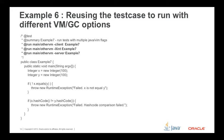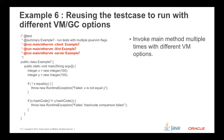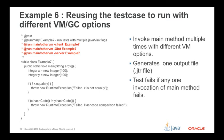Reusing the test case to run with different VM, GC, or Hotspot options can be achieved by specifying the '@run main' or other VM action tags multiple times in the test source. This means JTREG invokes the main method multiple times with different VM, Hotspot, or GC options. This test case generates only one output file, and the test fails if any one invocation of the main method fails. This is very useful if developers want the same test case run with multiple Hotspot GC options.